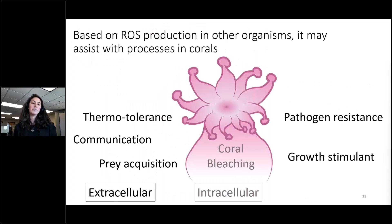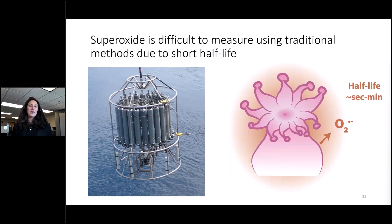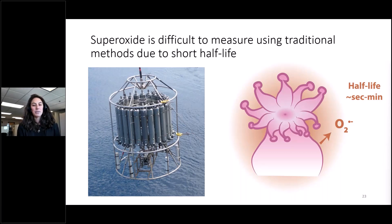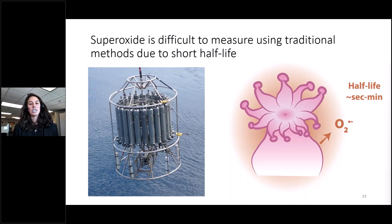You might be wondering why there isn't more research on this. Well, superoxide in particular is really hard to study because it has such a short half-life. It's difficult to use traditional measuring techniques where you collect water and bring it back to a lab to analyze. With superoxide, you have to bring the lab to the production site, and prior to this work, there was no way to measure superoxide in situ with submersible instruments. There is particular interest in investigating ROS in coastal ecosystems because they are ideal environments for producing ROS, with lots of UV radiation and oxygen production.